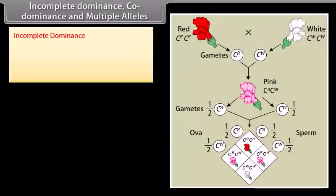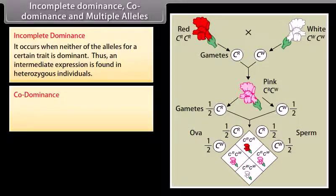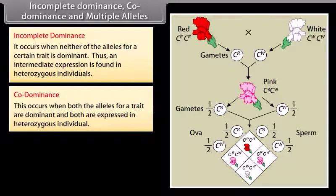Incomplete dominance and co-dominance. Incomplete dominance: It occurs when neither of the alleles for a certain trait is dominant. Thus an intermediate expression is found in heterozygous individuals. Co-dominance: This occurs when both the alleles for a trait are dominant and both are expressed in heterozygous individual. Such a phenomenon can be observed with multiple alleles.